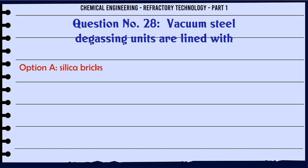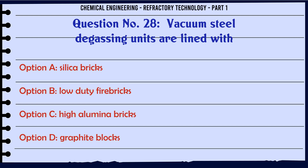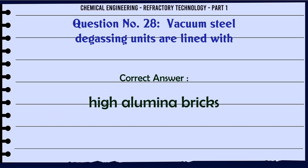Vacuum steel degassing units are lined with: A. Silica bricks, B. Low-duty fire bricks, C. High alumina bricks, D. Graphite blocks. The correct answer is High alumina bricks.